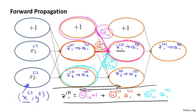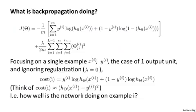To better understand what backpropagation is doing, let's look at the cost function. Here's the cost function that we had for when we have only one output unit. If we have more than one output unit, we just have a summation over the output units indexed by k there.